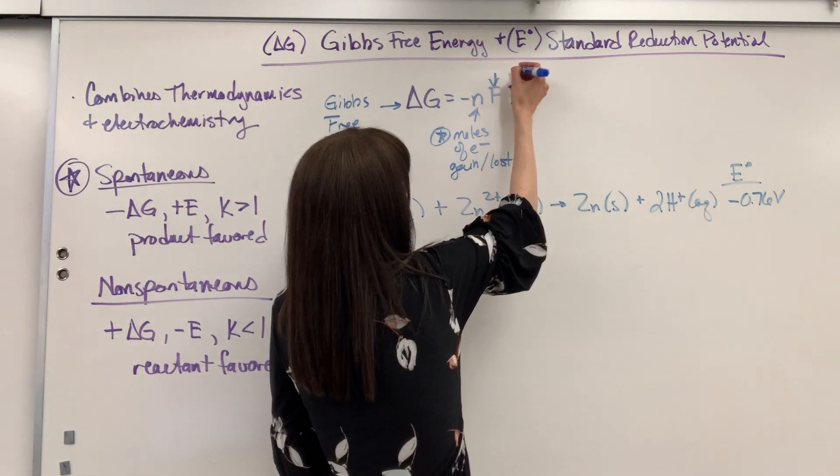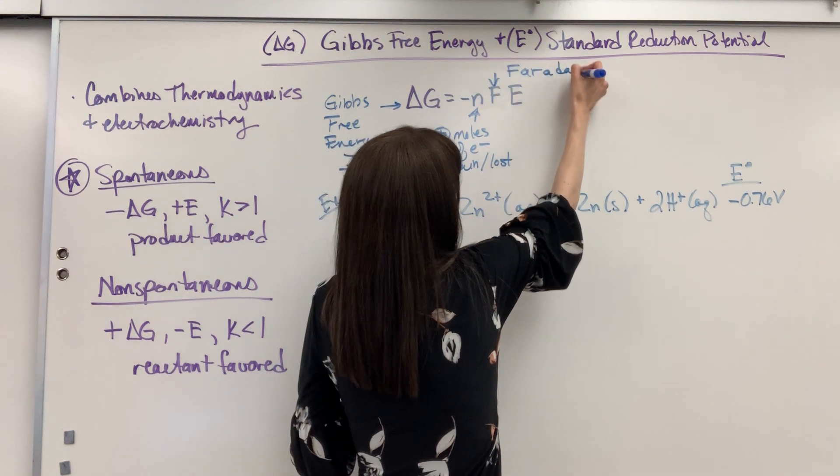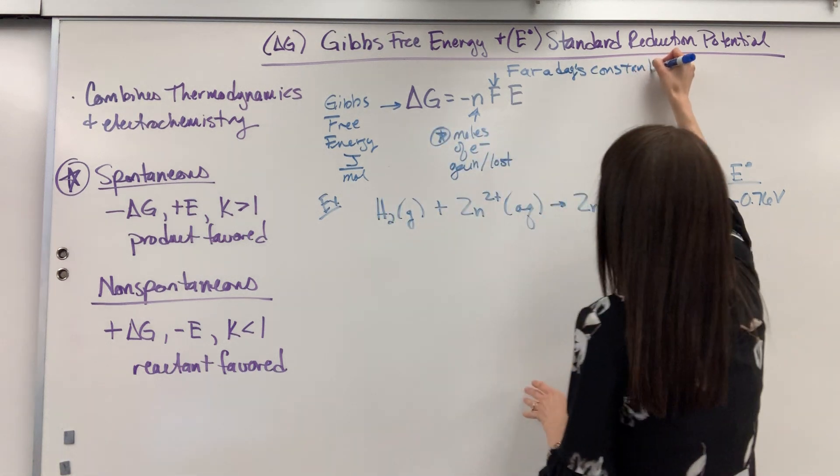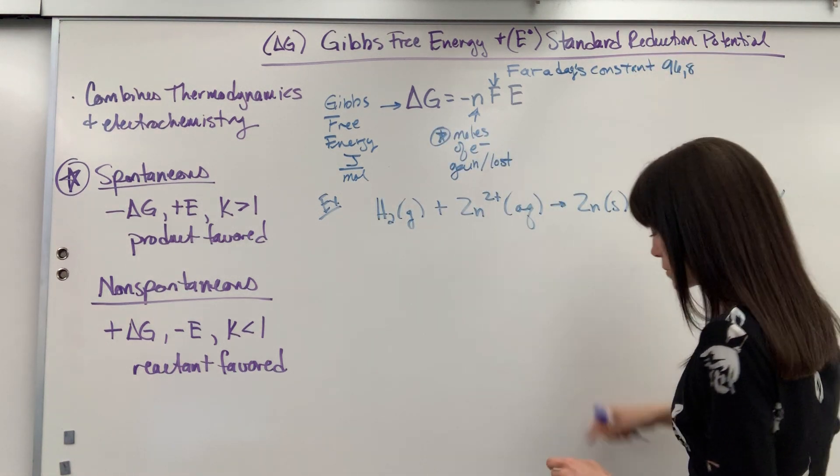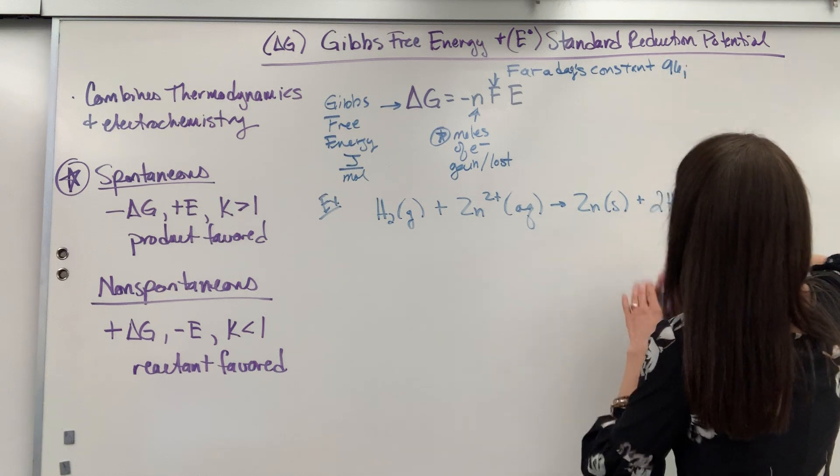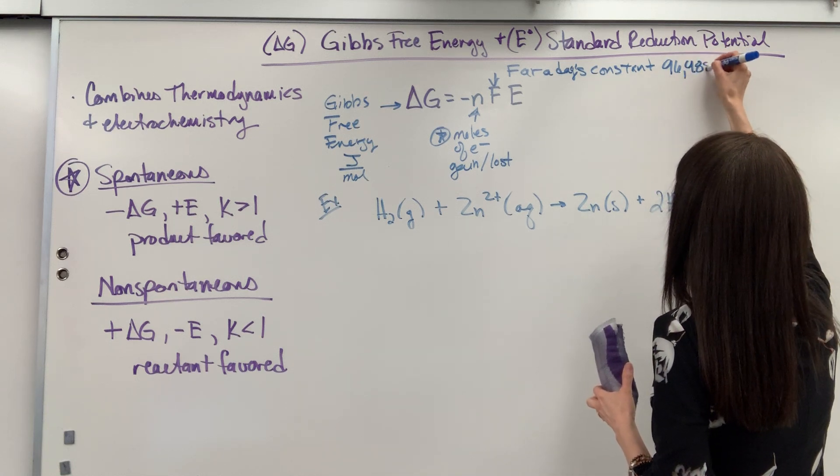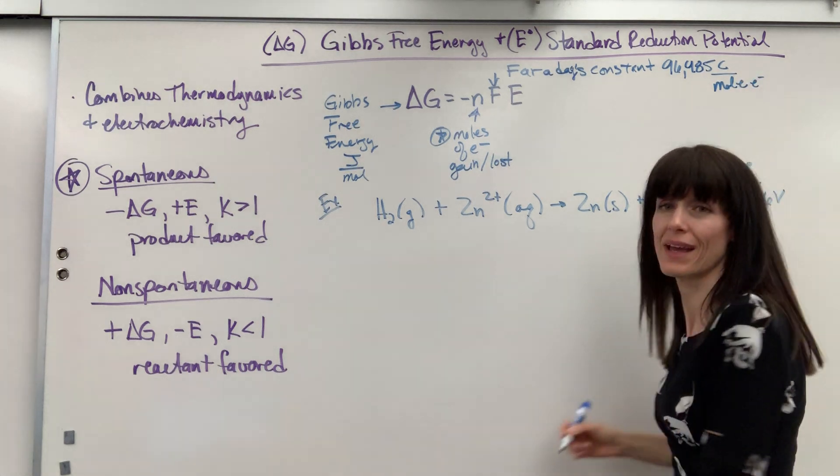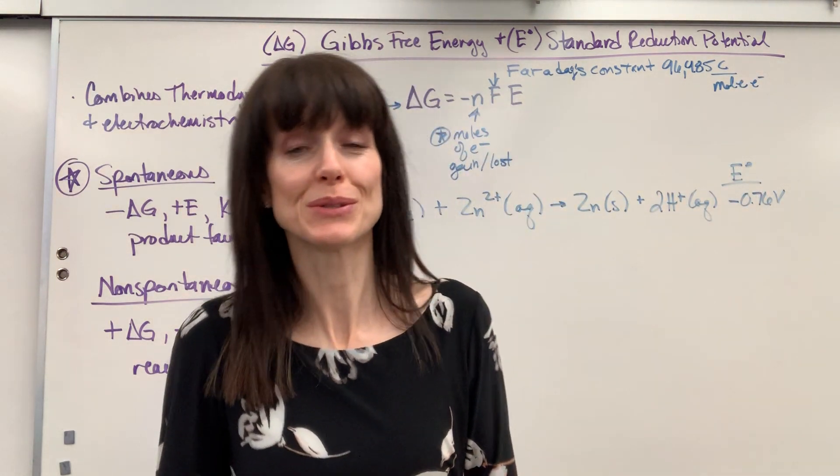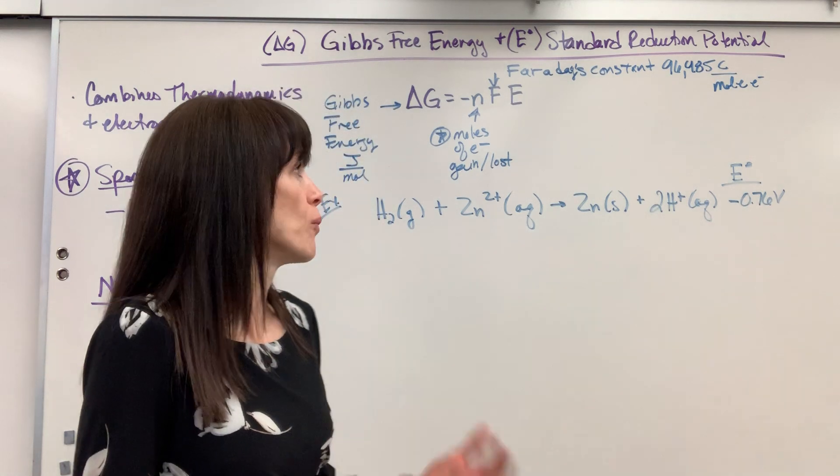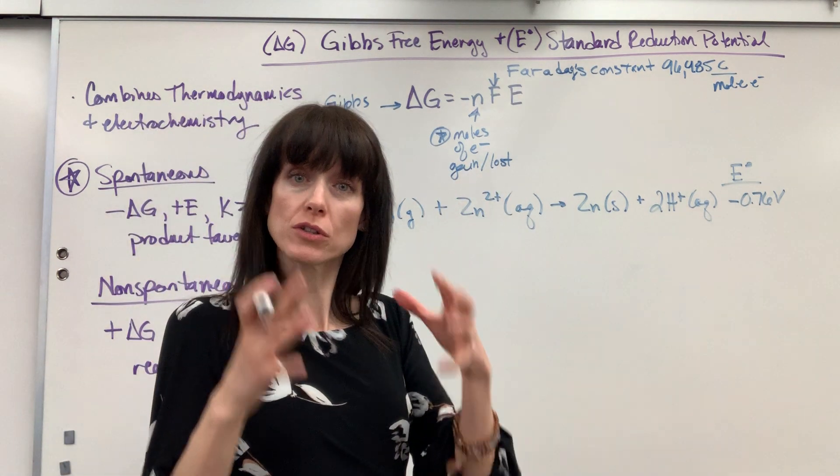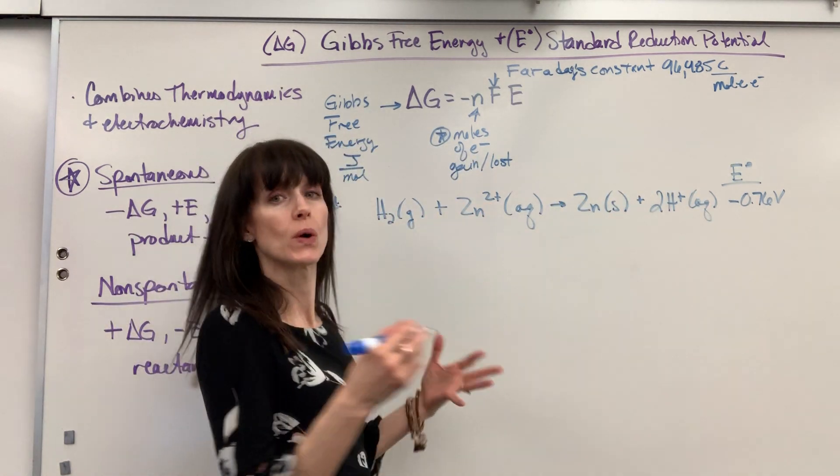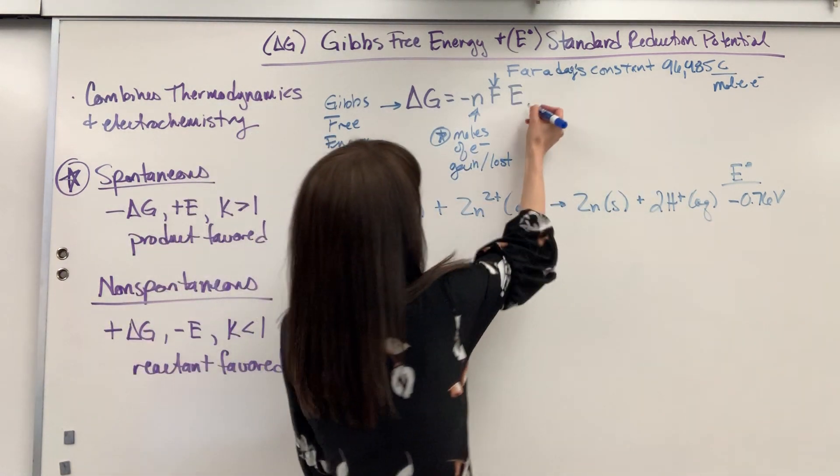F is Faraday's constant, this really should be given to you, 96,485 coulombs per mole of electron. If we have one mole of electrons, 6.022 times 10 to the 23, that total charge on that mole of electrons is 96,485 coulombs. Coulomb is just a unit for charge.